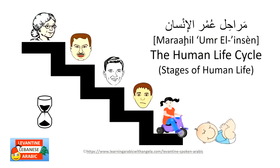Marahil al-omr al-insan — literally 'stages of human life,' the human life cycle. Marhala is a stage in the singular, marahil means stages. Omr can mean age or life literally. Al-insan means a human being.